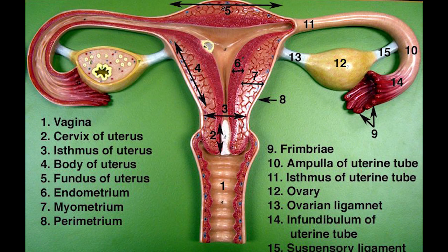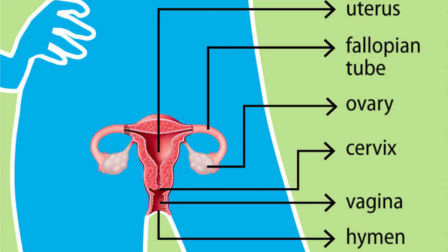The female reproductive tract includes the vagina, uterus, and fallopian tubes and is prone to infections. The vagina allows for sexual intercourse and childbirth, and is connected to the uterus at the cervix.